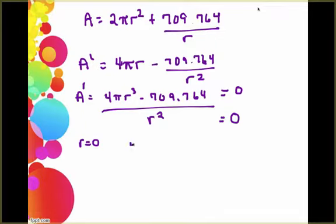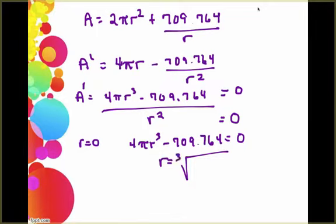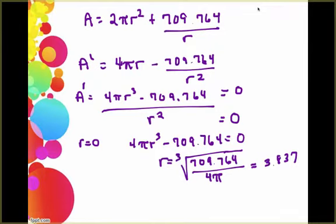And then if I set the numerator equal to 0 and solve, you're going to get that r is the cube root of 709.764 divided by 4 pi, which is 3.837. So that would be my critical point that I need to consider.